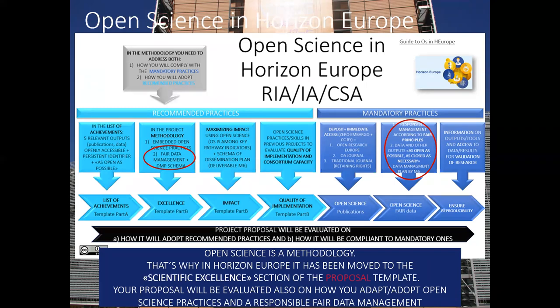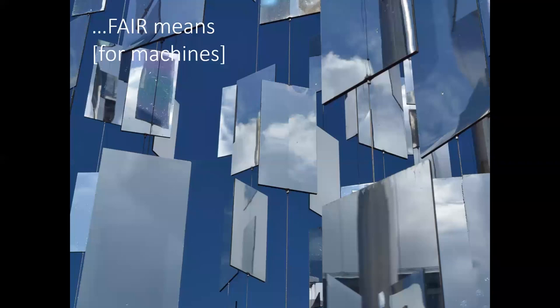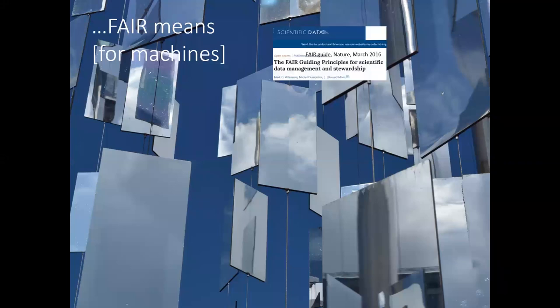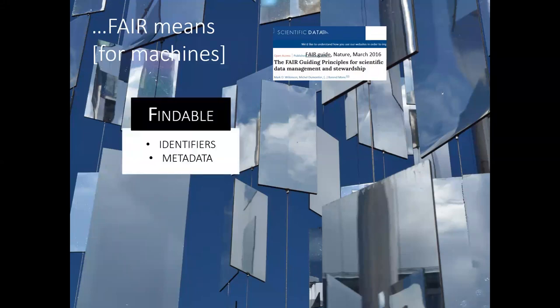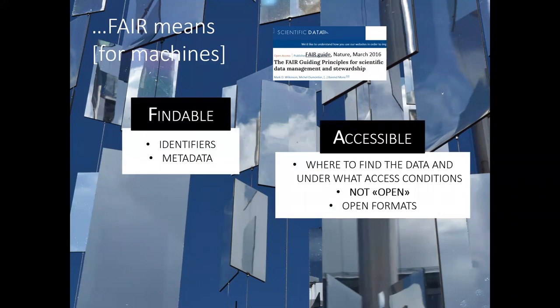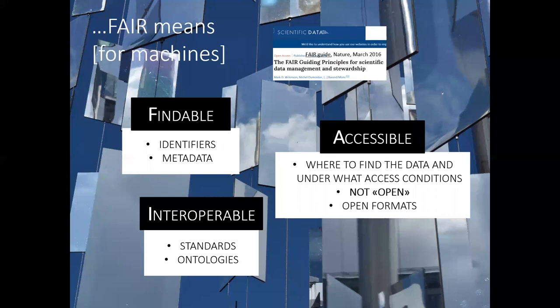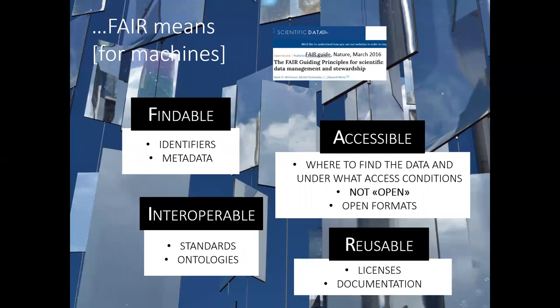The FAIR article was published in Nature in March 2016. To be findable you need identifiers and metadata. To be accessible, you need to know where to find the data and under what access conditions. Accessible does not mean open — it simply means I need to know where to find the data. Interoperable means using standards and ontologies. Reusable means you need licenses and documentation.